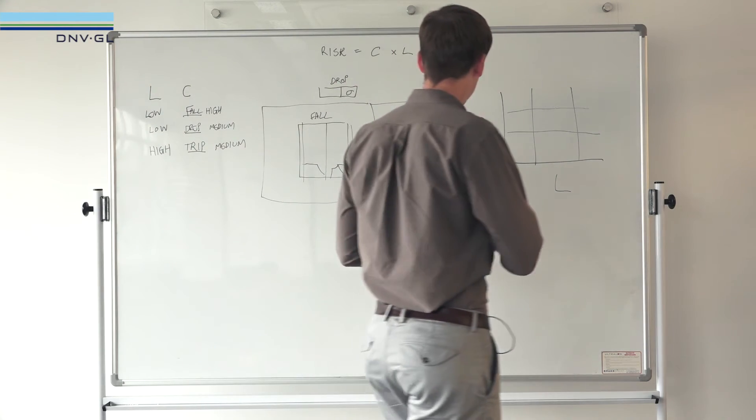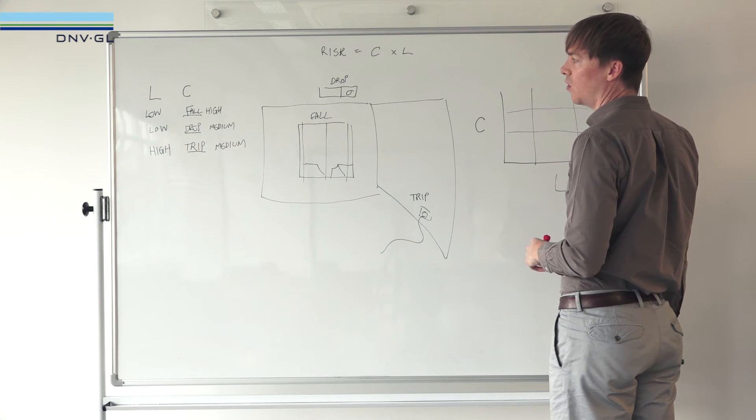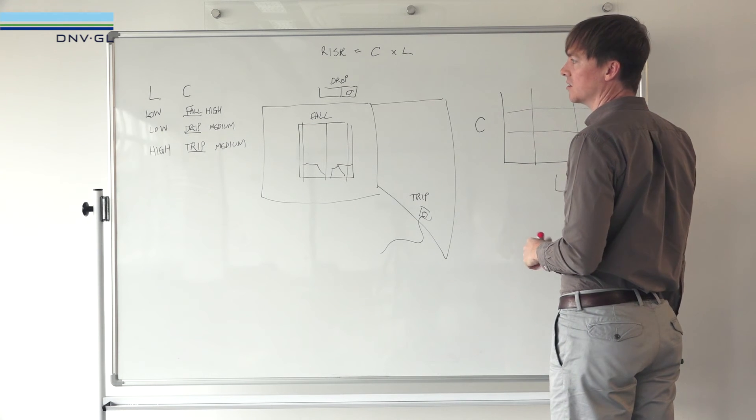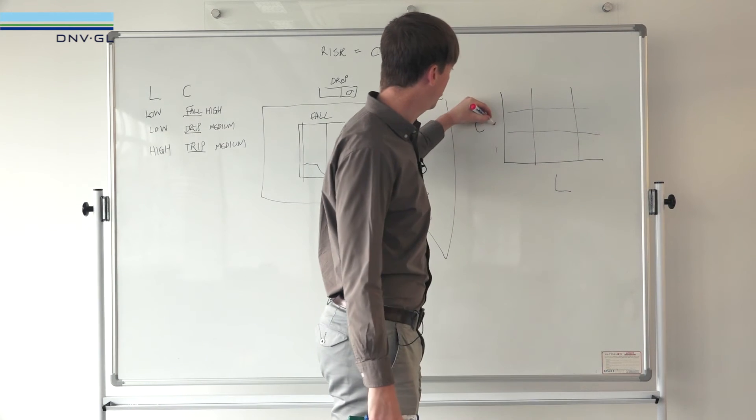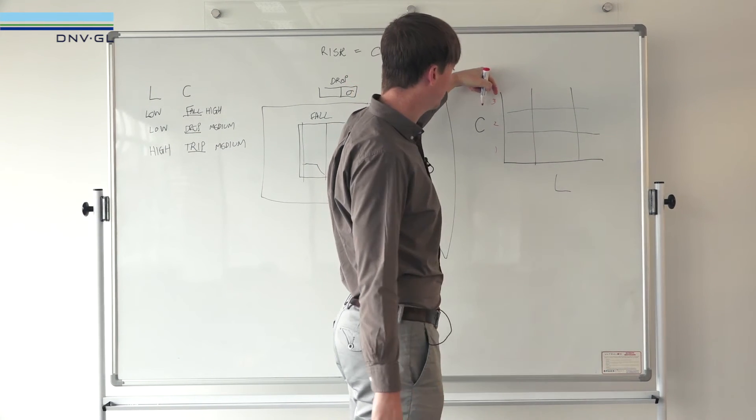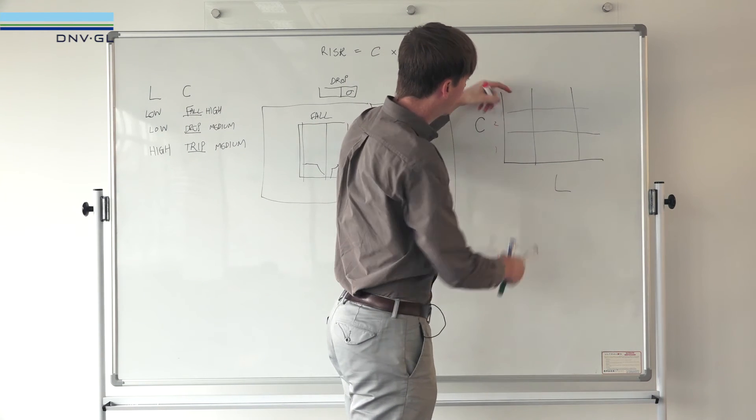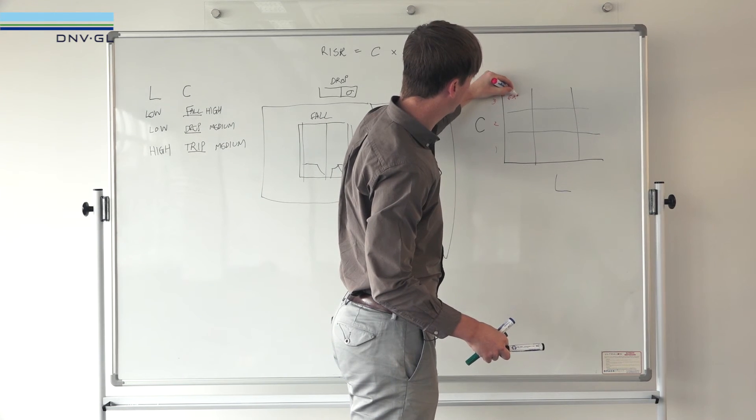We can now take those facts and put this into a risk matrix and see what happens. With the first one that was at the top of our hazard ranking, falling from a window has a high consequence. So of 1, 2, and 3 it's up at that level. But the likelihood has been determined to be low, so it's over here - high consequence but low likelihood.